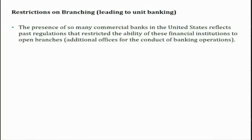One of the changes that happened in the US is the restriction on branching. There are two types of banking we can classify based on the branch. One is called branch banking and the other one is called unit banking. Branch banking means banks — the main bank — are allowed to start branches across the country, within the county or within the state and across the country.